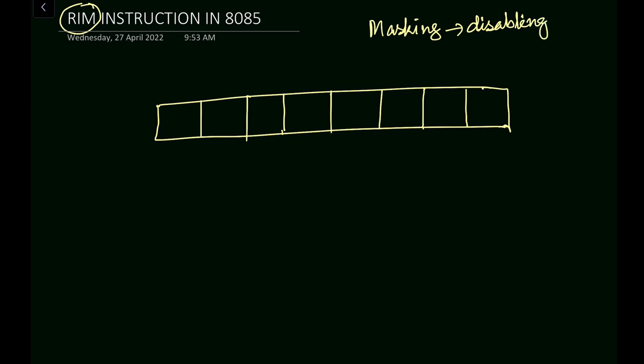Suppose we are wearing a face mask — that means we are covering our face and other persons are not able to see our face. In the case of a microprocessor also, when you mask some interrupts, that means that interrupt will be disabled. Using this Read Interrupt Mask, we will know the various statuses of the interrupts.